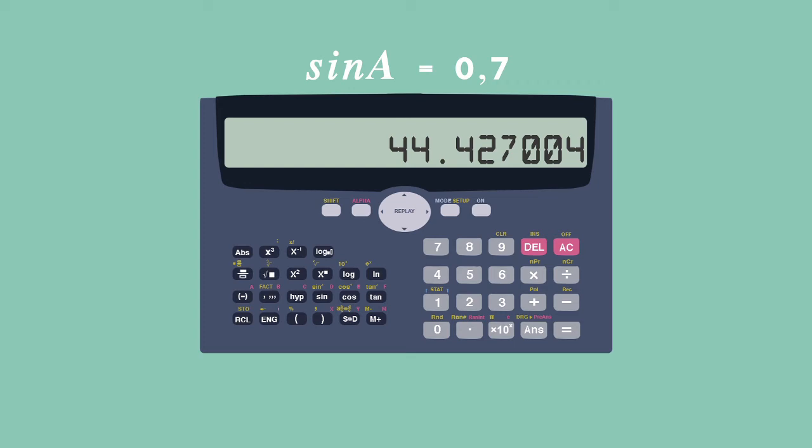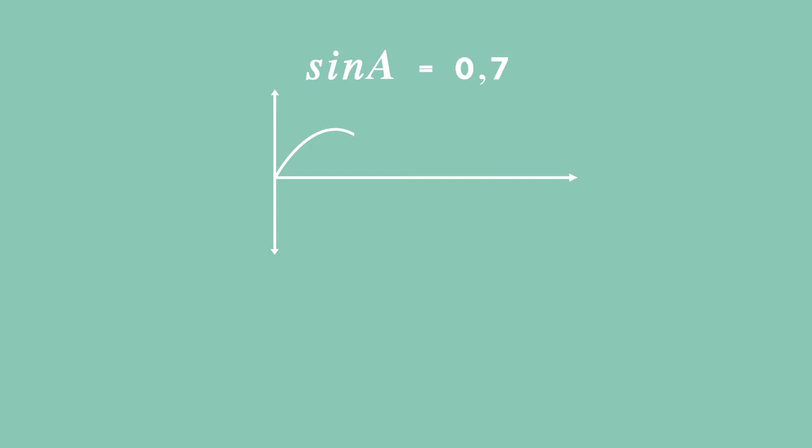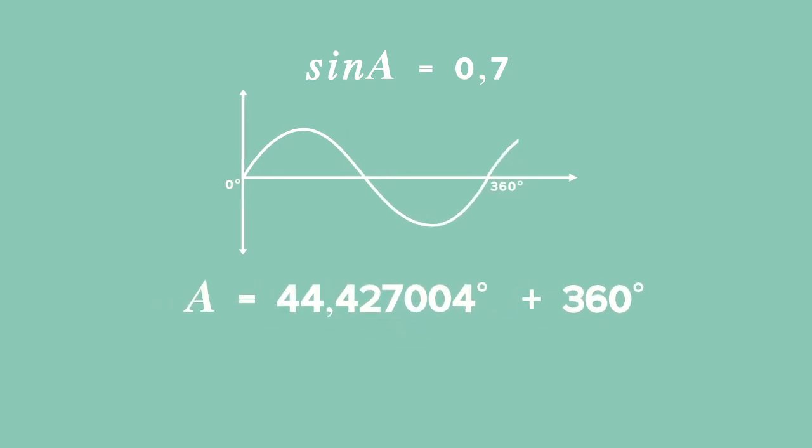Our reference angle is 44.427004. With the general solution, we look at the period of the sine graph, and we see that it repeats every 360 degrees. Every multiple of 360, which is times K, will give us different solutions for angle A. So, we say plus 360K to include all of these solutions. K is always an integer value, so it will only take on whole numbers.